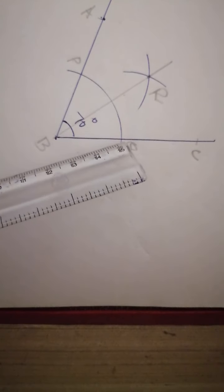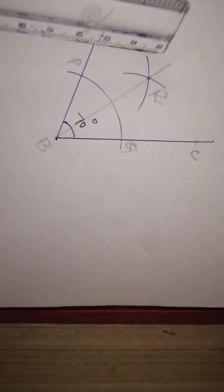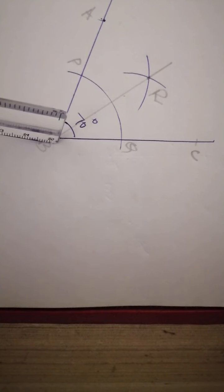In the same way, using the same radius, place the compass at Q and cut this arc. Both intersect at point R. Join it to the vertex. BR is the bisector of the given angle.